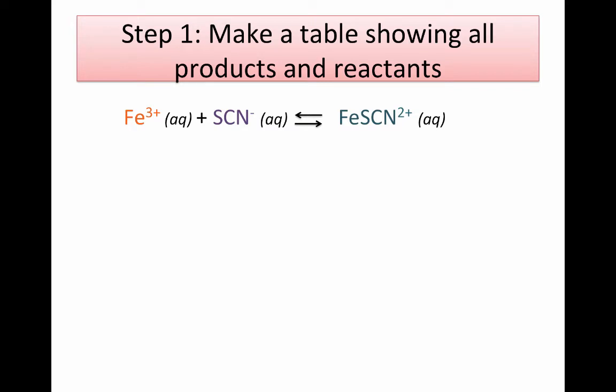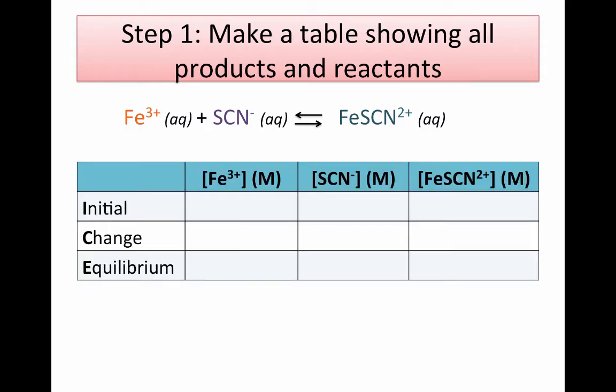The first thing we do in step one is make a table showing all the products and the reactants. We have our two reactants, iron 3+ and thiocyanate ion, and then we have our iron thiocyanate complex as our product. We have three rows in this table: initial concentration, concentration change, and equilibrium concentration. The first letters spell ICE, so we frequently call this an ICE table.